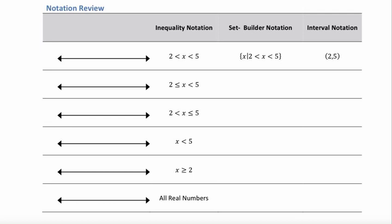This first row of the table is nearly filled in. The only thing missing is the graph. We have 2 is less than x is less than 5 — this is the inequality notation. Our set builder notation is read as the set of x such that 2 is less than x, which is less than 5. In interval notation, we have the interval between 2 and 5 with parentheses, because there's no equal sign on the inequalities, meaning 2 and 5 are not included.